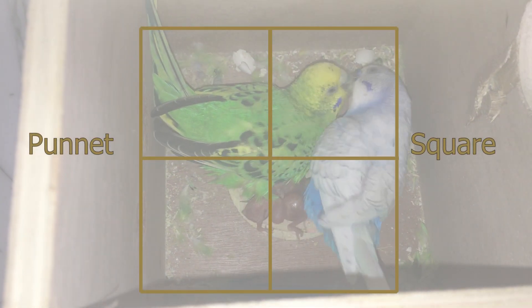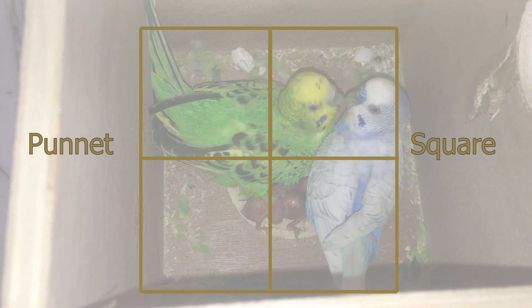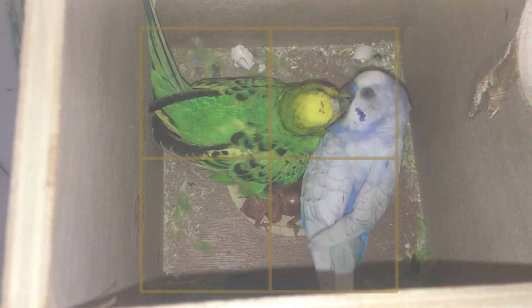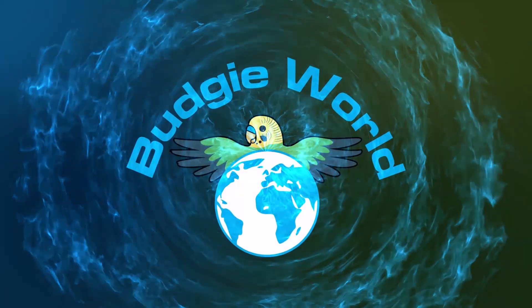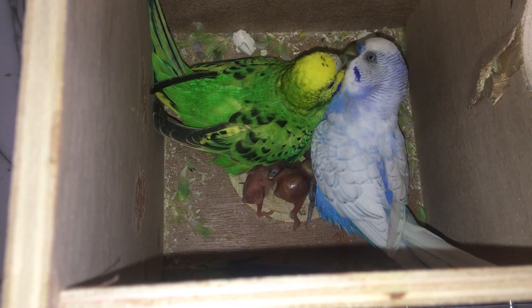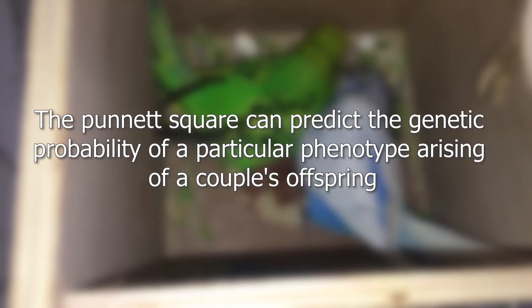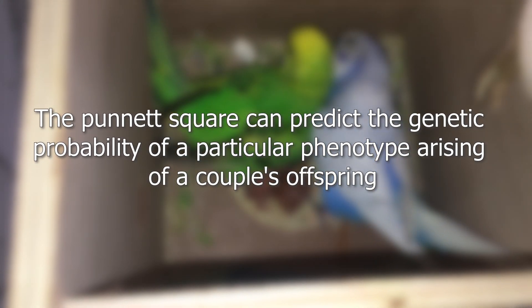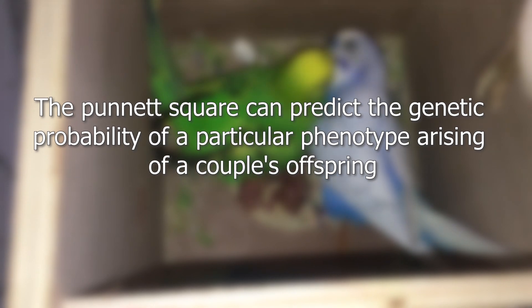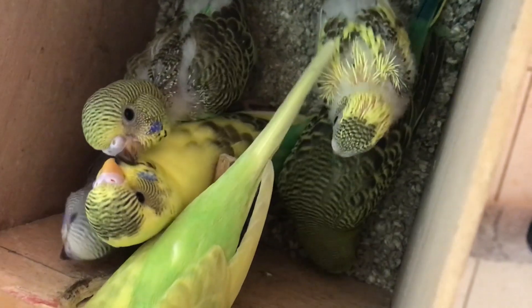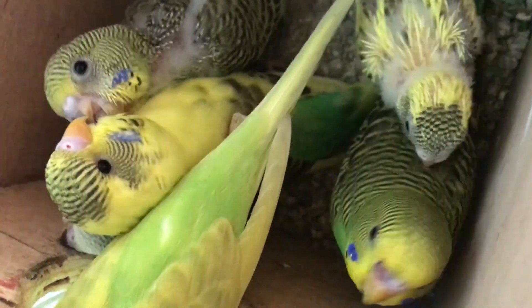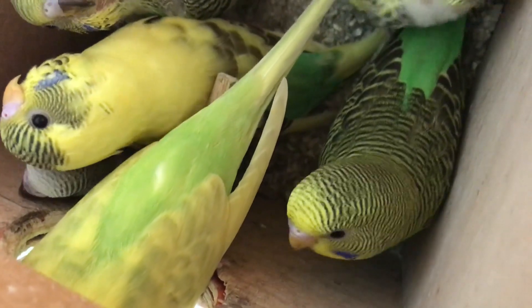The Punnett Square — what is it, when can we use it, and how can we use it? The Punnett Square can predict the genetic probability of a particular phenotype arising in a couple's offspring. What it does is tell you what alleles are likely to be expressed in the offspring, given the genotype of the parents.